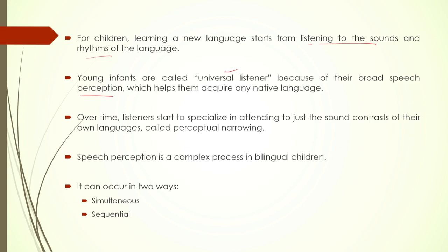Children can perceive any number of stimuli given to them, which is why they are called universal listeners. As a result, children can learn any native language — whatever language or languages they are exposed to, they are capable of learning all of them simultaneously. Over time, however, the listener starts to specialize in attending to just the sound contrasts of their own language. This broad domain of perceptual awareness starts to shrink and gradually gets focused on the language of their own — this process is called perceptual narrowing.